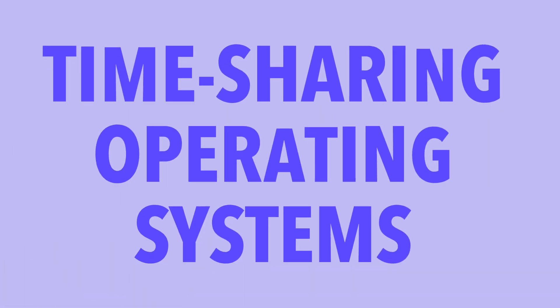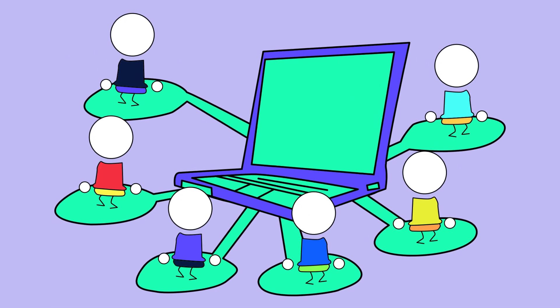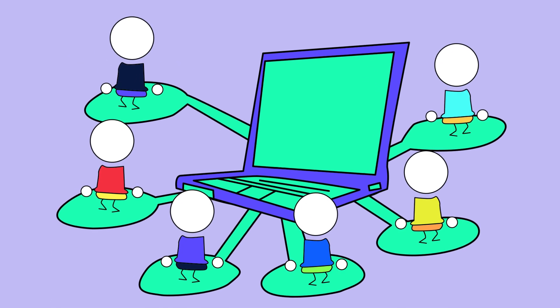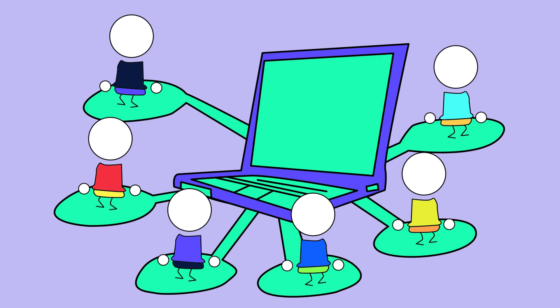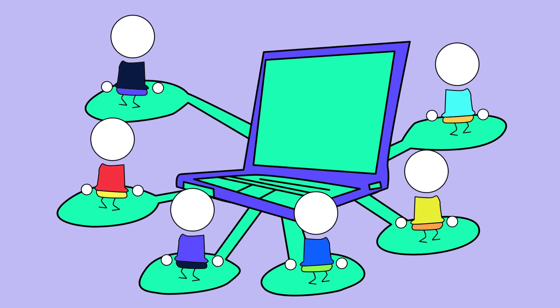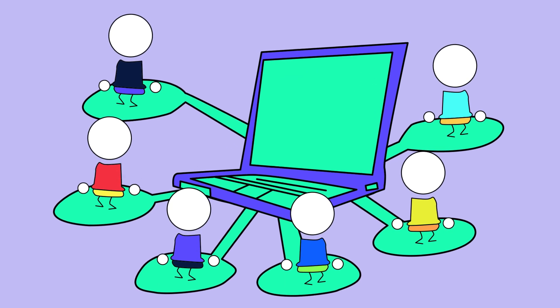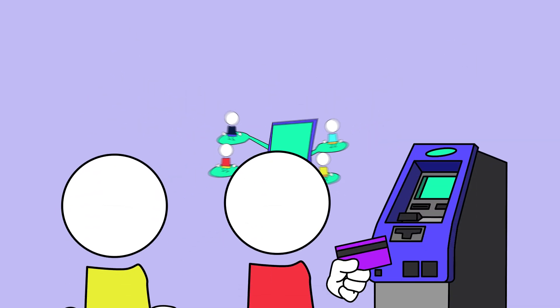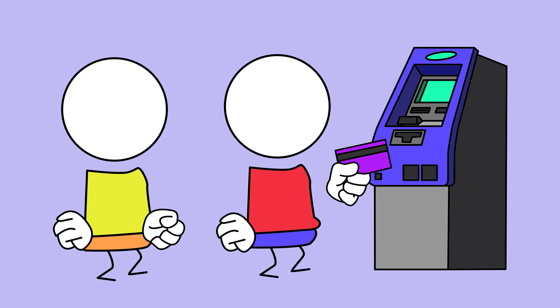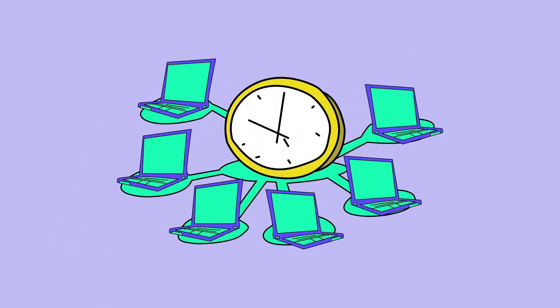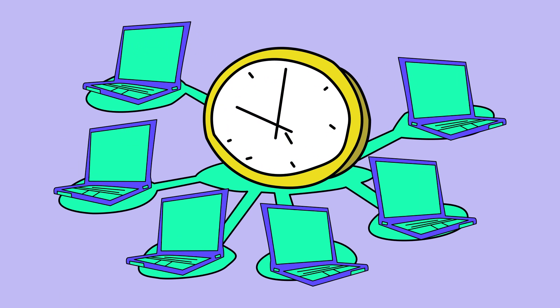Time-sharing operating systems allow multiple users to use a computer simultaneously by giving each person a small amount of time to use the CPU. Imagine you're at an ATM and everyone gets a turn to use it for a few seconds. The computer shares its time across users.